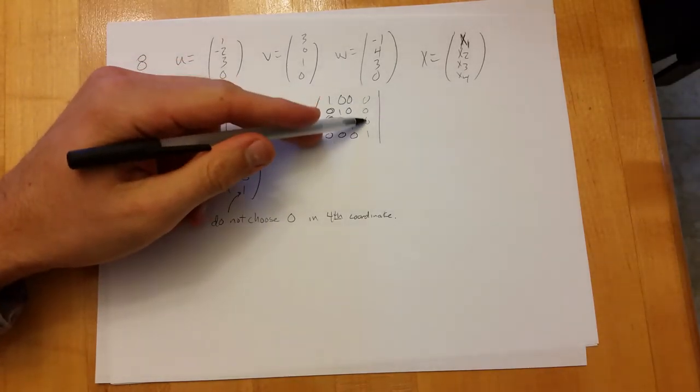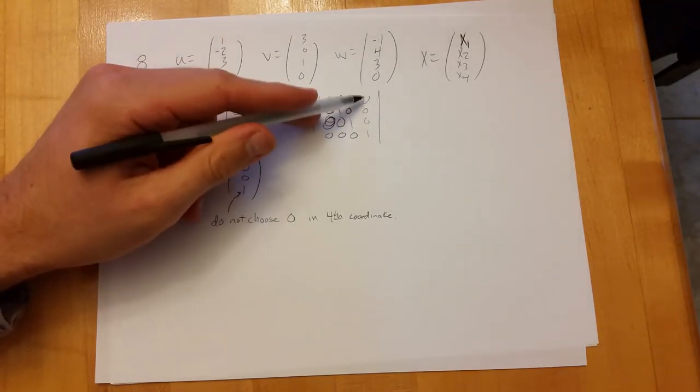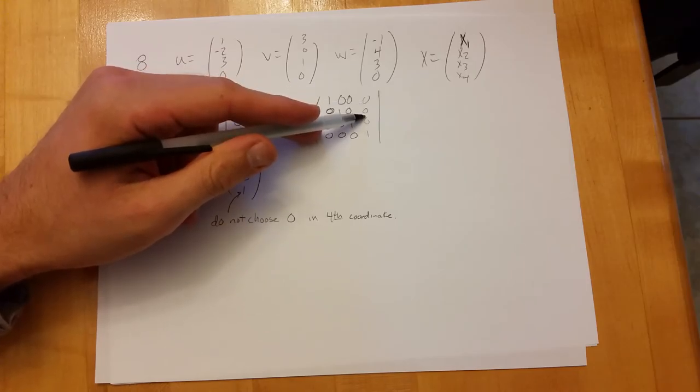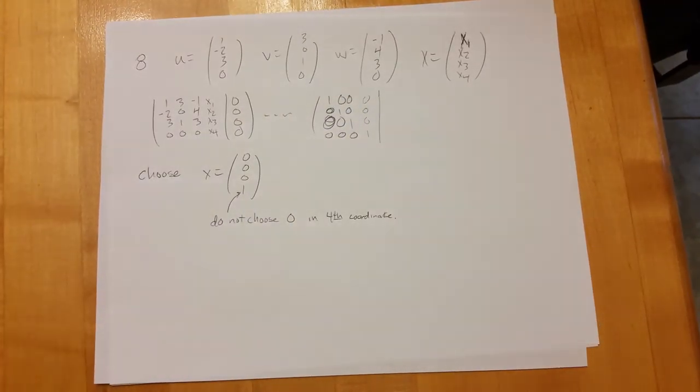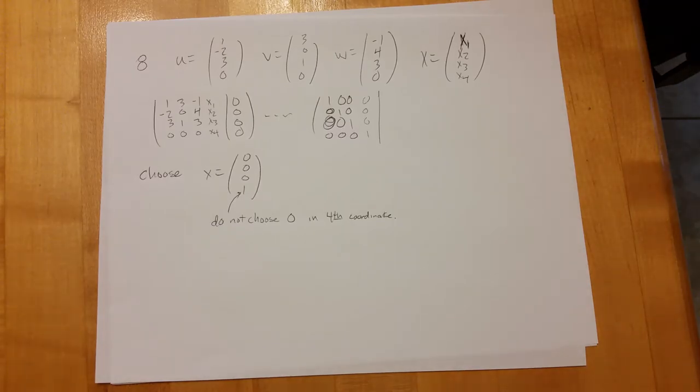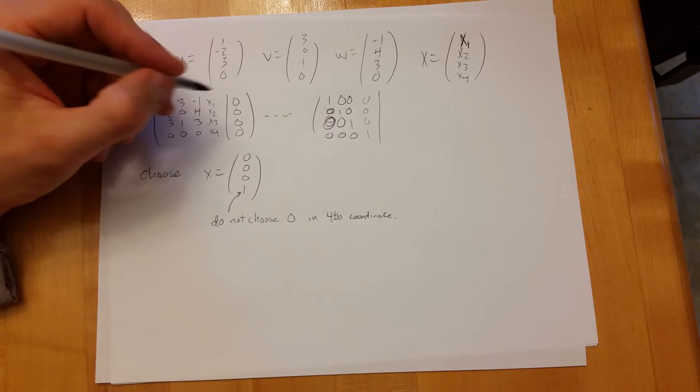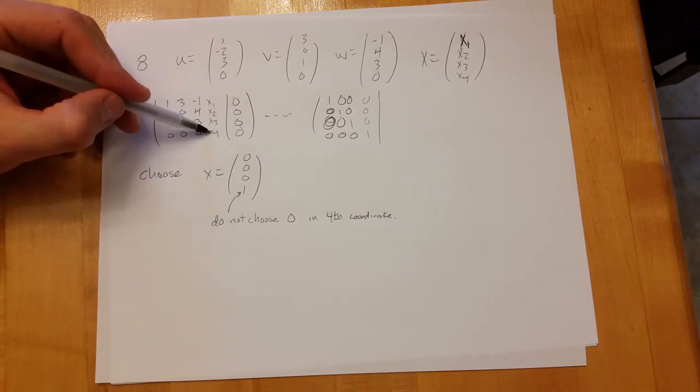And if I didn't choose zeros here, that's fine. I would just get something different over here, I'll get some values here. If I kept going for the row operations, I can use that one to clear it out later. In fact, I can actually even at the very beginning use row four to clear it out.